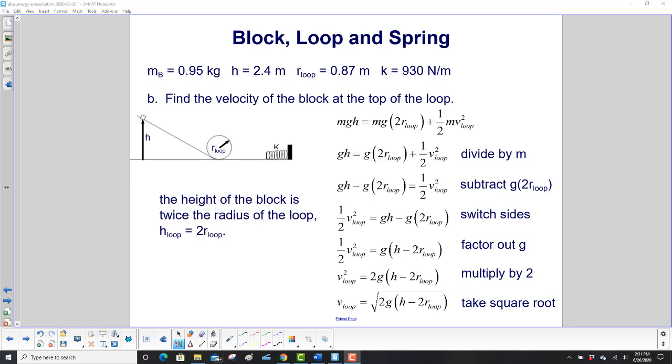We're going to leave some stuff out because we solved all this earlier with the block in the loop. So we're just going to start with the energy conservation between this point here and this point here where you're at the top of the loop. So at this point, it's just mgh, and at the top of the loop, it's going to be mg.